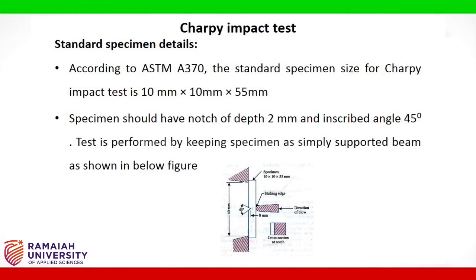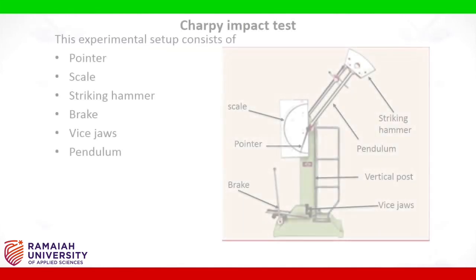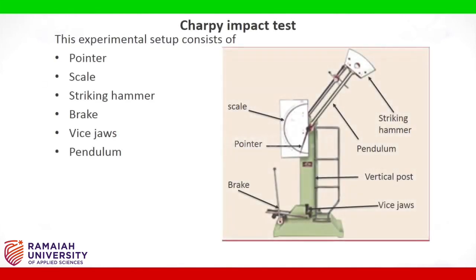The test is performed by keeping the specimen as a simply supported beam as shown in the figure. This experimental setup consists of a pointer, scale, striking hammer, brake, vice jaws, and pendulum.